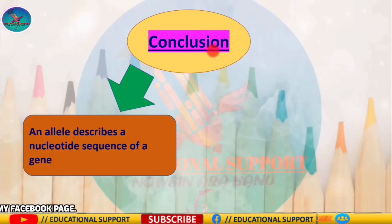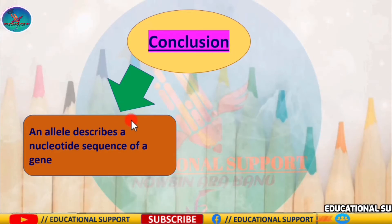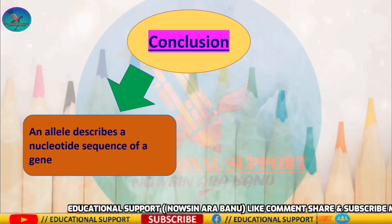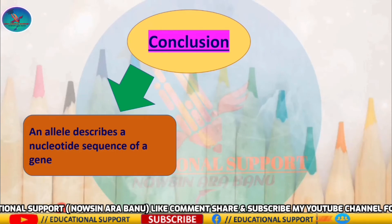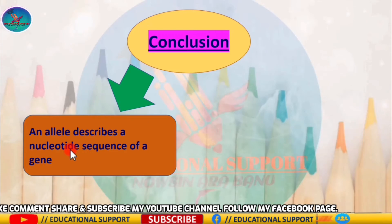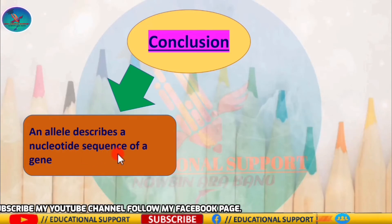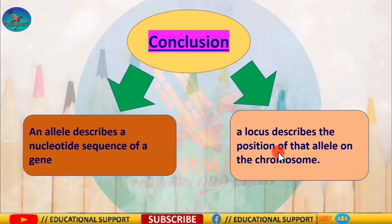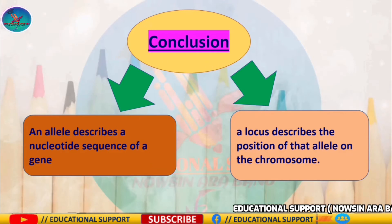Allele and locus are two different terms used to describe the properties of a gene. An allele is an alternative form of a gene; different alleles arise due to mutations of a gene. A locus is the position of a gene on the chromosome. The alleles of a particular gene can be found in the same loci of the homologous chromosome pair. An allele describes the nucleotide sequence of a gene, while a locus describes the position of that allele on the chromosome.